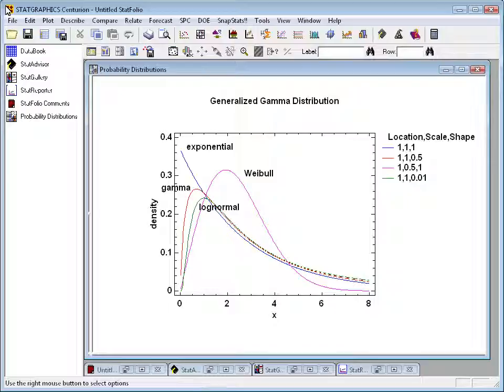Depending on the values of those different parameters, it can take a number of different forms. For example, it can mimic the exponential distribution, the gamma distribution, the log-normal distribution, or the Weibull distribution.